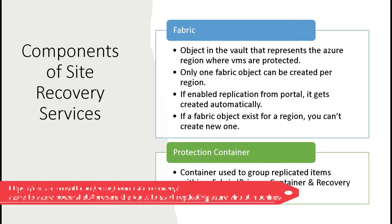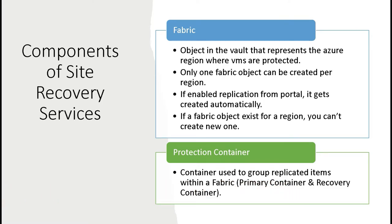When preparing the vault to start replicating your Azure VMs, there are a few components that get created. A fabric is an object in the vault that represents an Azure region where the VMs are protected. We will need two — one for East US 2 as a primary fabric, and one in Central US acting as a recovery fabric. Only one fabric object can be created per region. If you enable site recovery replication for a VM in the Azure portal, it will create a fabric object automatically, and if a fabric object already exists for a region, you'll get an error if you try to create a new one. Another thing that gets created is a protection container, which is a container used to group the replicated items within the fabric — one for the primary container and a recovery container in the recovery fabric.